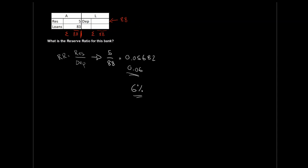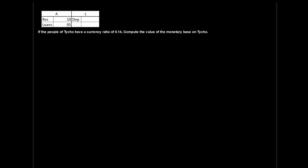Let's carry on to the next example. A lot of the skills we built in this question we'll need to utilize in layers going forward. Here, the people of Tyco have a currency ratio of 14% — currency ratio of 0.14. We want to compute the value of the monetary base on Tyco. Our monetary base is going to be all of our reserves plus all of our cash — all of our currency in circulation. We know our reserves, but how do we figure out how much cash is in circulation? We can figure that out through the currency ratio.